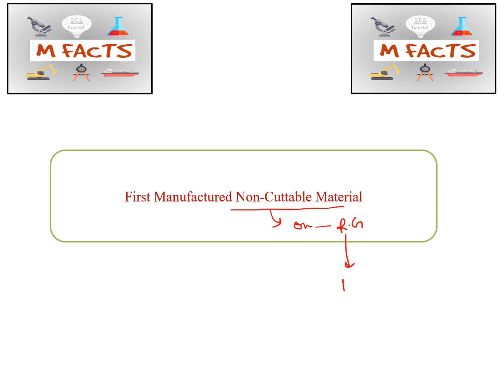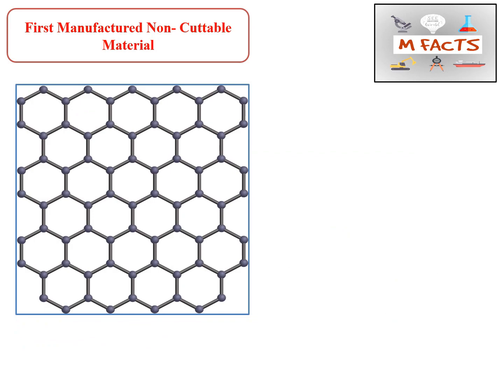In this research, they have shown that this is a new strong and lightweight material which is non-cuttable. As we know, till now graphene is the strongest material, which is an extraordinary conductor